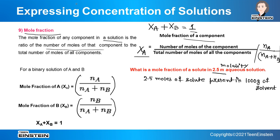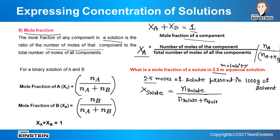Let the mole fraction of solute be x_solute = n_solute / (n_solute + n_solvent). The n_solute is directly given as 2.5. We only need to calculate n_solvent. Since it is an aqueous solution, the solvent is water, so we convert 1000 g of water to moles.